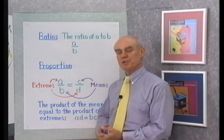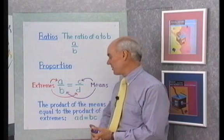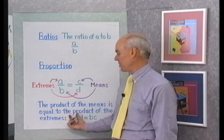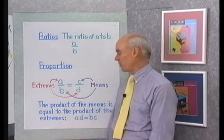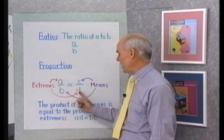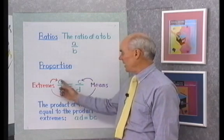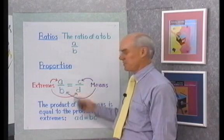The property that we have of proportions that comes from this multiplication property of equality is this: The product of the means is always equal to the product of the extremes in any proportion. So, if you multiply A times D, it's always the same as what you get when you multiply B times C. A times D is equal to B times C.